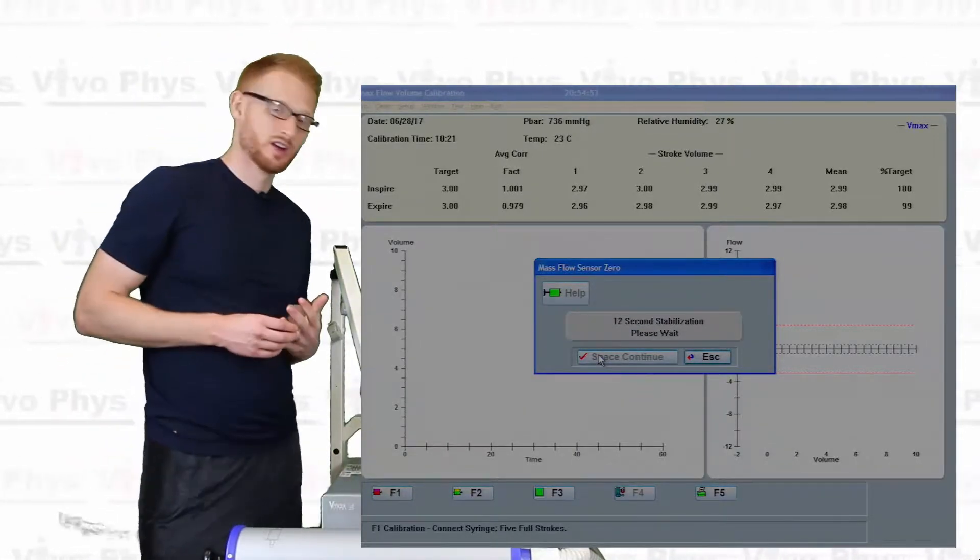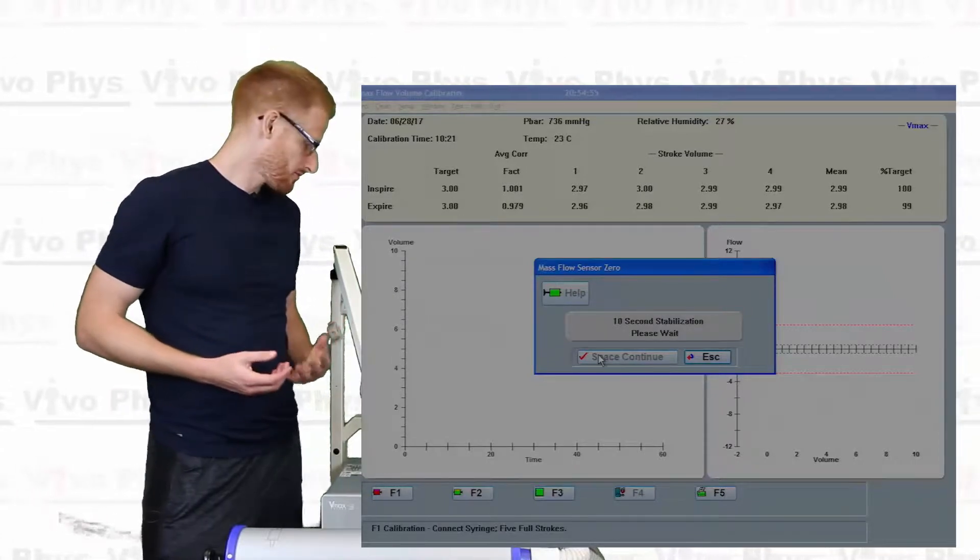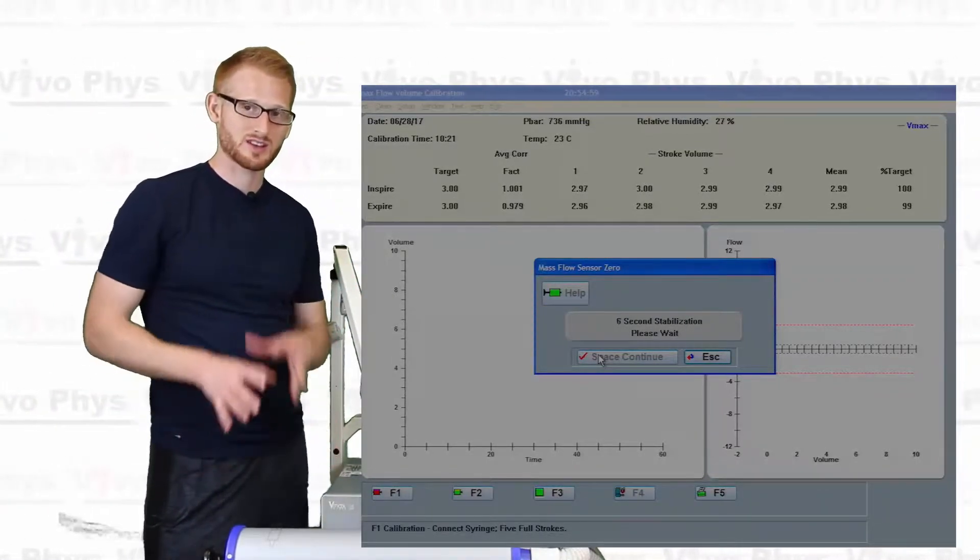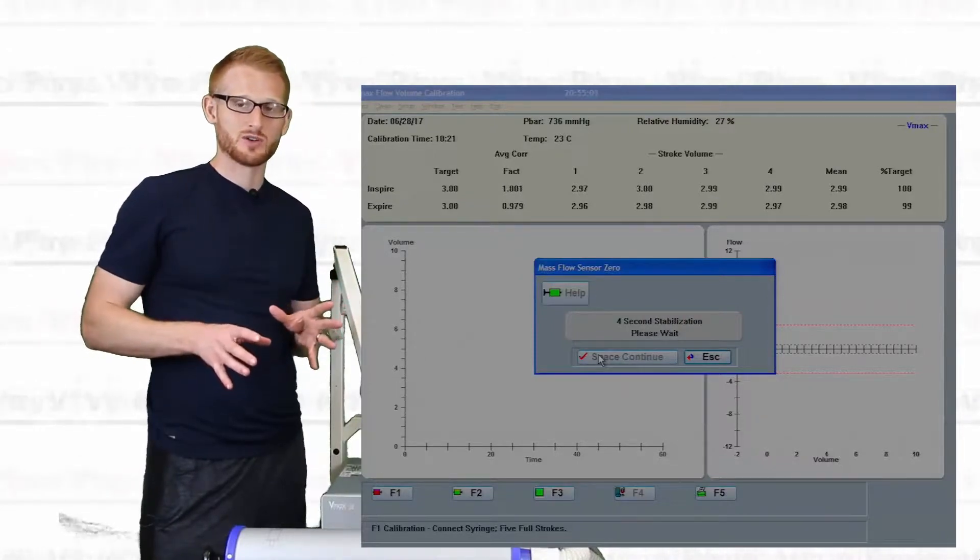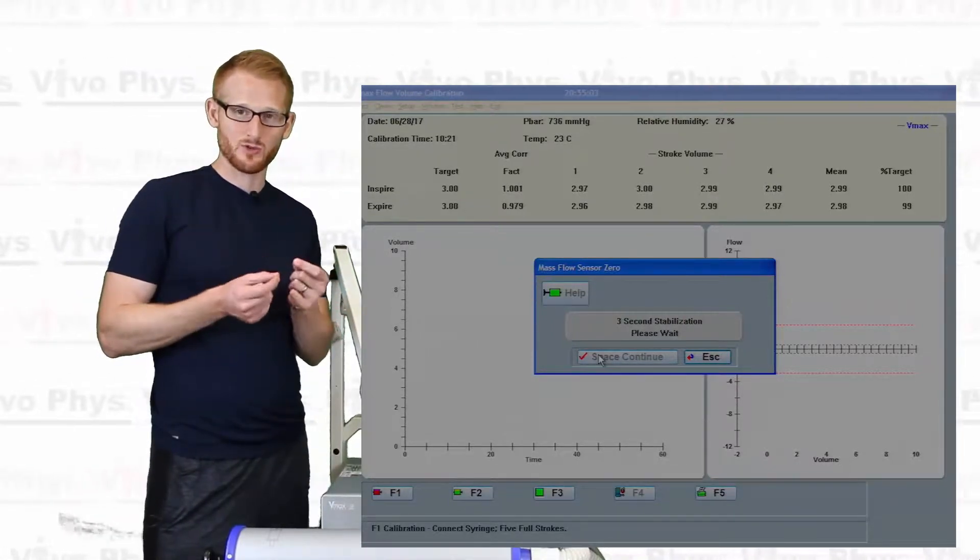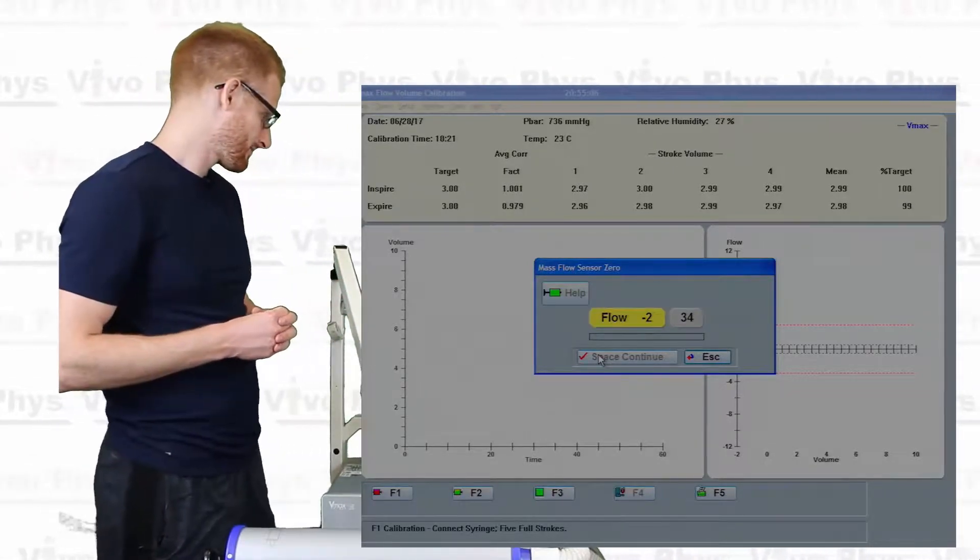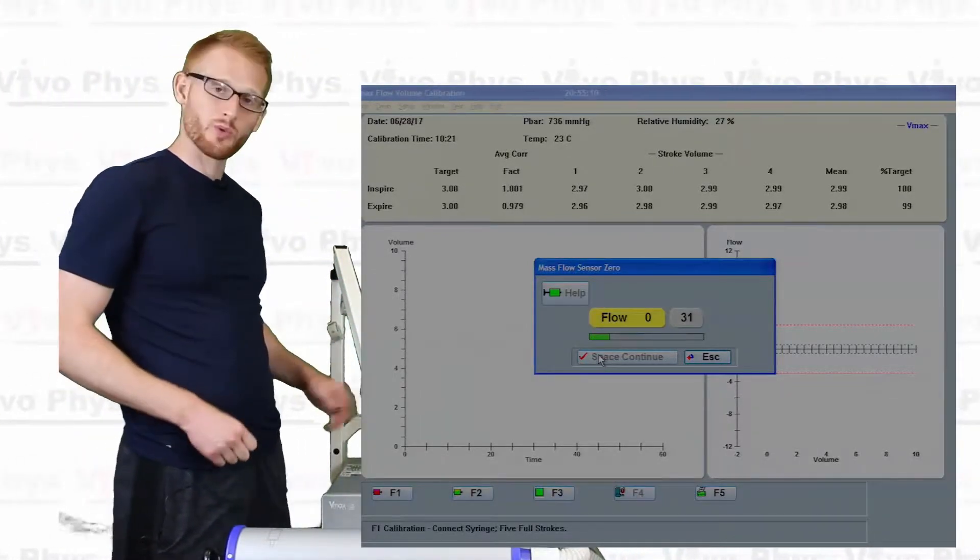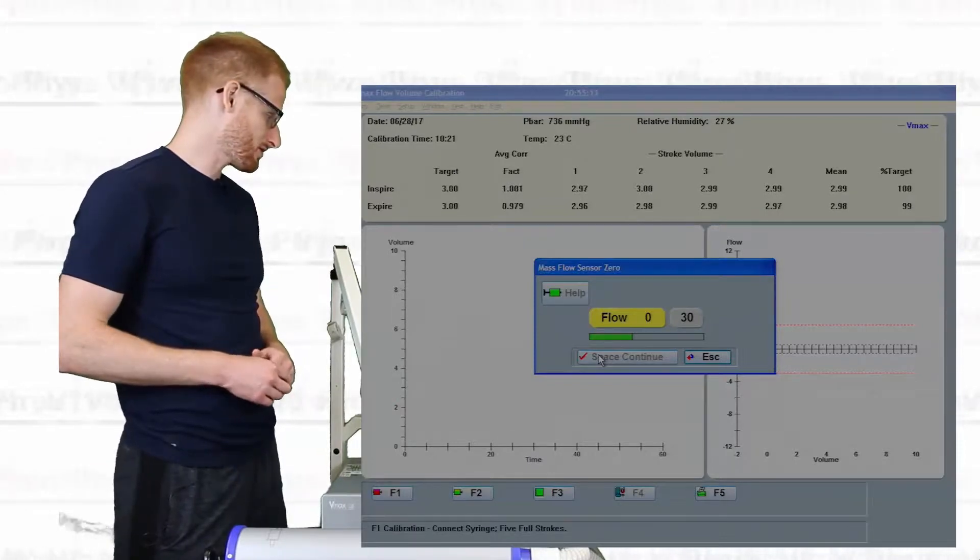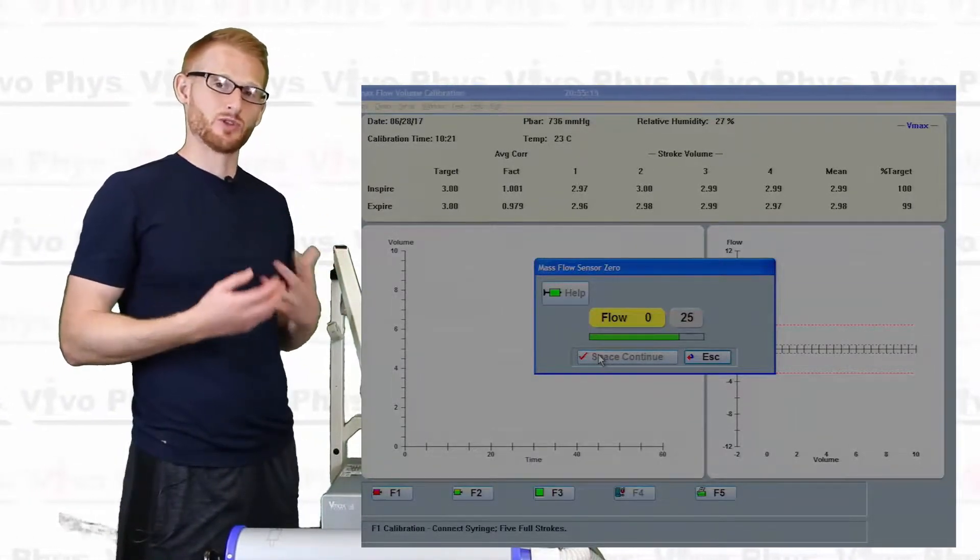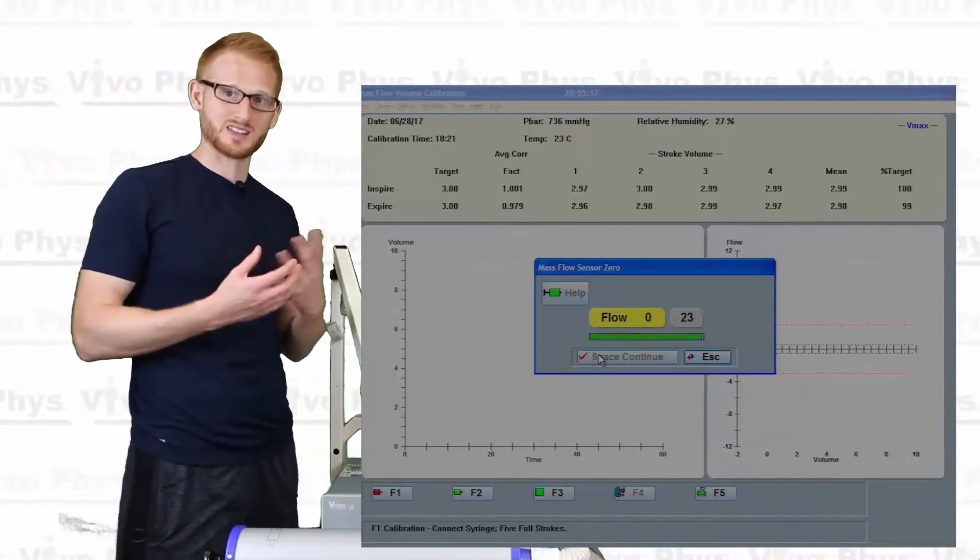Alright, so now it's looking for a period of zero flow. Alright, so we don't want to touch anything. We don't want to move the syringe at this point because anything that we're going to do is going to cause a little bit of air movement in the system. And it's not going to be zero flow anymore.